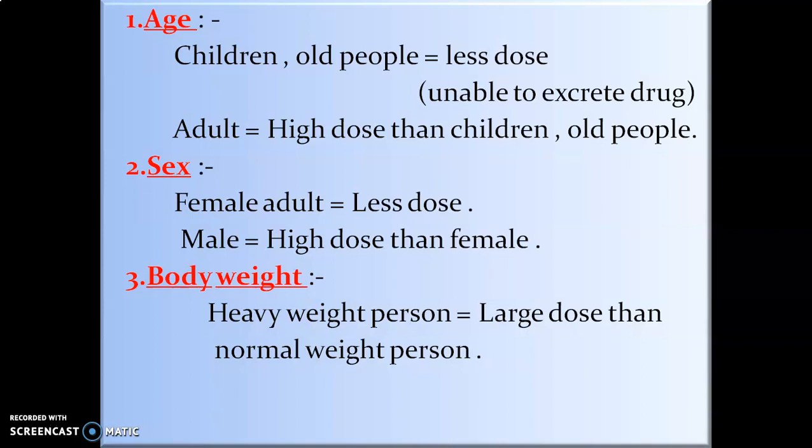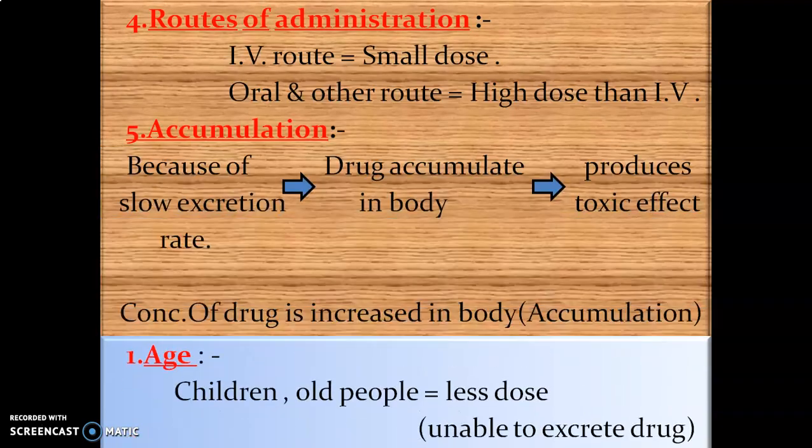Second is sex — female adults require less dose as compared to male adults. Third is body weight — a heavy weight person requires a larger dose than a normal weight person. When there is more body weight, more dose will be required.